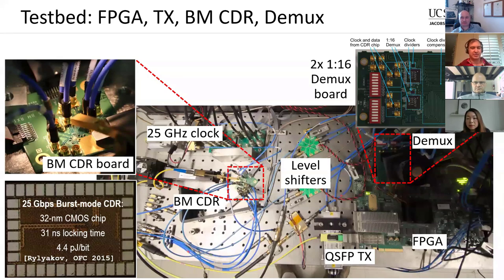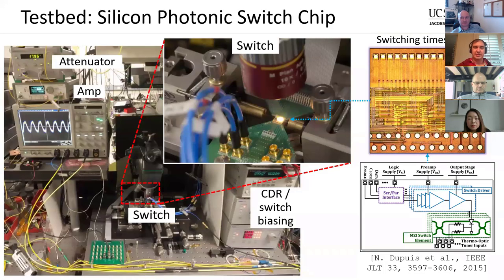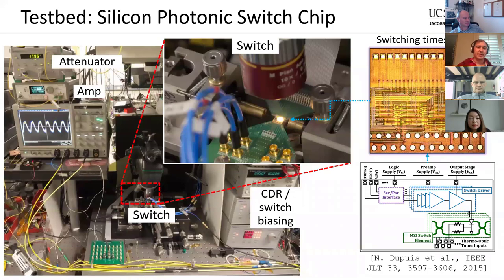The burst-mode chip is built in 32nm CMOS — one of the experimental IBM devices — with a locking time of 31 nanoseconds at 25 Gbps or about 40 nanoseconds at 20 Gbps. On the other side, the optical switch is a 2x2 silicon photonic switch examined under a microscope. We use fiber probes to connect light into and out of the switch chip, which is controlled via the FPGA with blue cables. The setup also shows optical components including an attenuator, amplifier, and power supplies for biasing.